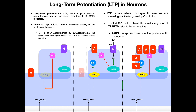The more depolarization we have in this cell, that's telling the brain that we need to use this cell and this neural circuit a lot. So if this neural circuit represents a concept you need to learn more efficiently, you're going to be getting a lot of depolarization because you're using it a lot. We're going to have to get these AMPA receptors into the postsynaptic membrane of the dendrite.